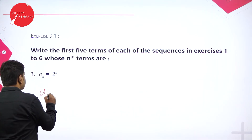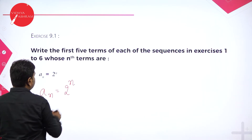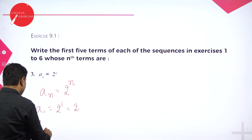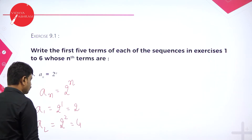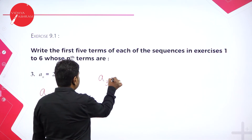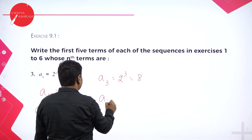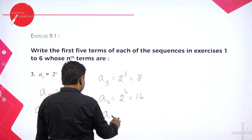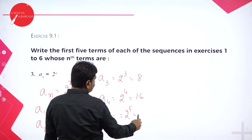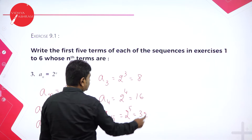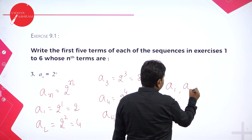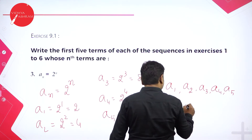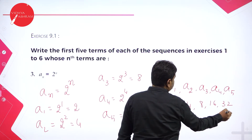Problem 3: a_n = 2^n. a₁ = 2¹ = 2. a₂ = 2² = 4. a₃ = 2³ = 8. a₄ = 2⁴ = 16. a₅ = 2⁵ = 32. Therefore the first 5 terms are 2, 4, 8, 16, 32.